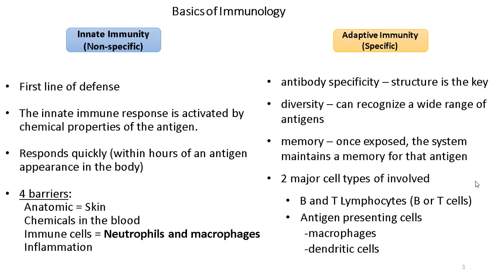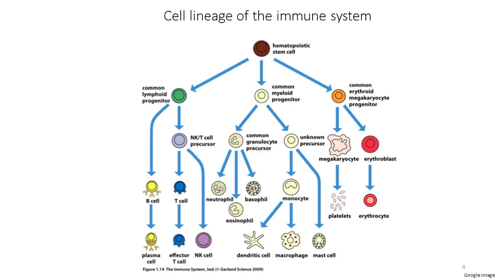Whenever there is a specific antigen — a protein, virus, or bacteria — macrophages engulf them, and a part of this is exposed on their surface on specific receptors called major histocompatibility complexes or MHCs. Once that antigen is presented, it activates B or T cells. This is the serial lineage of the immune system.